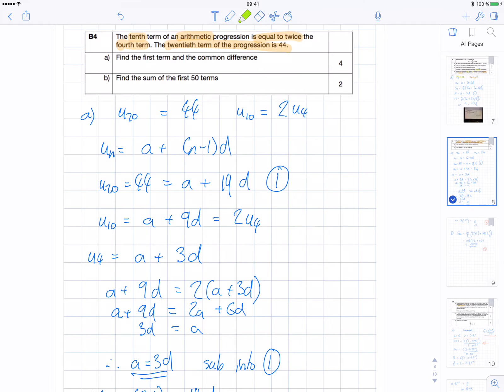First of all, when you look at the question, highlight, like I have, the important parts of the question. So the 10th term of an arithmetic progression is equal to twice the 4th term. The 20th term of the progression is 44. Find the first term and the common difference. You have to do both bits.